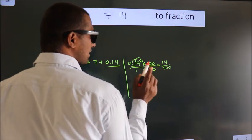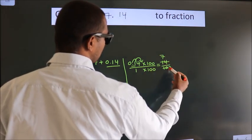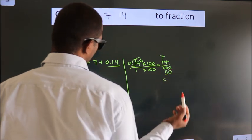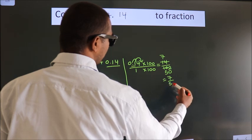Now cancel with 2. 2 into 7, 2 into 5, this 0 as it is. So the fraction we got is 7 by 50.